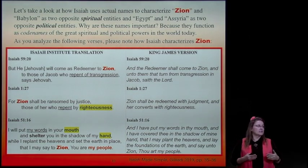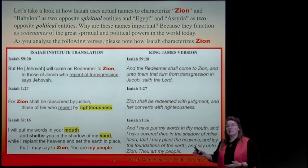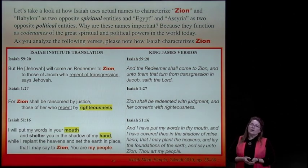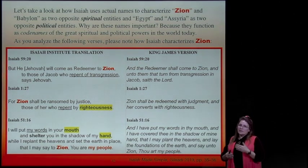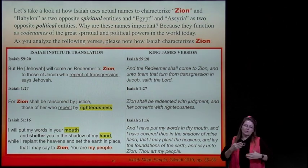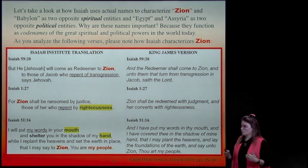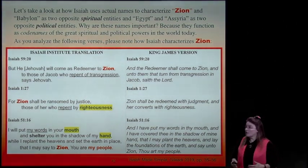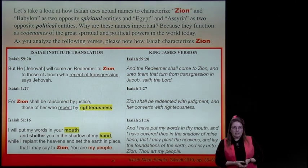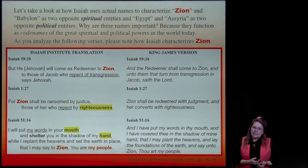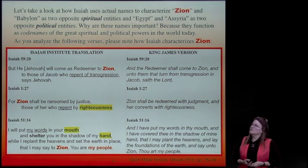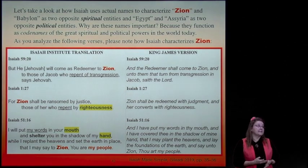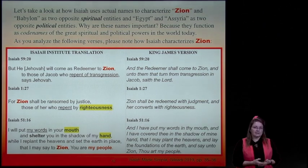We're going to take a look in just a minute at what happens in old Jerusalem and how that battle is different. So let's take a minute and look at how Heavenly Father describes the New Jerusalem—how he describes Zion on the American continent in Isaiah. Isaiah 59: 'He, Jehovah, will come as a redeemer to Zion, to those of Jacob who repent of transgression, says Jehovah.'